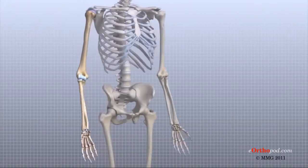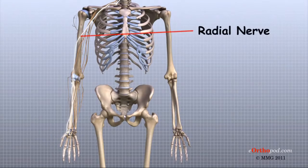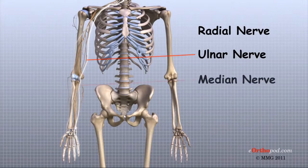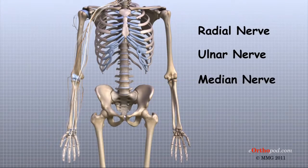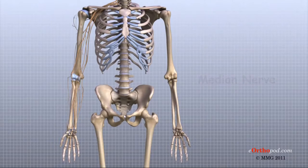All of the nerves that travel down the arm pass across the elbow. Three main nerves begin together at the shoulder: the radial nerve, the ulnar nerve, and the median nerve. These nerves carry signals from the brain to the muscles that move the arm and hand. The nerves also carry signals back to the brain about sensations such as touch, pain, and temperature.